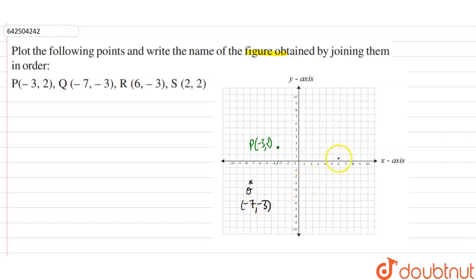Now, R is 6 comma minus 3. So, 6 here and minus 3 is again here. This point is 6 comma minus 3.